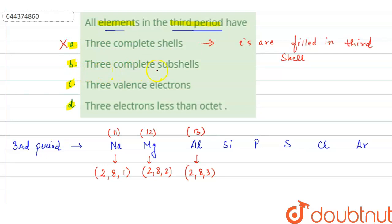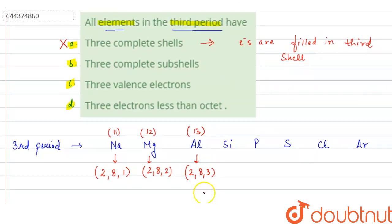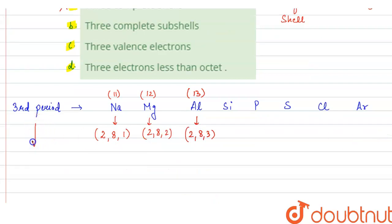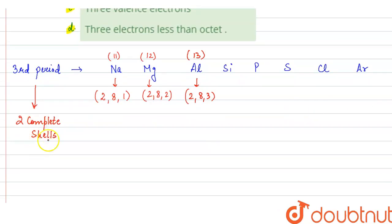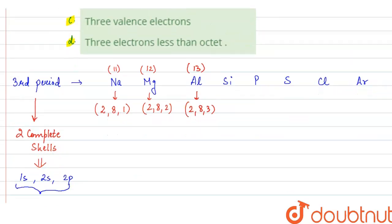In option B, it says three complete subshells. In the third period, there are two complete shells. In those two complete shells, the subshells are: 1s in the first shell, and 2s and 2p in the second shell. So the total number of complete subshells is 3 — 1s, 2s, and 2p. This means option B is correct.